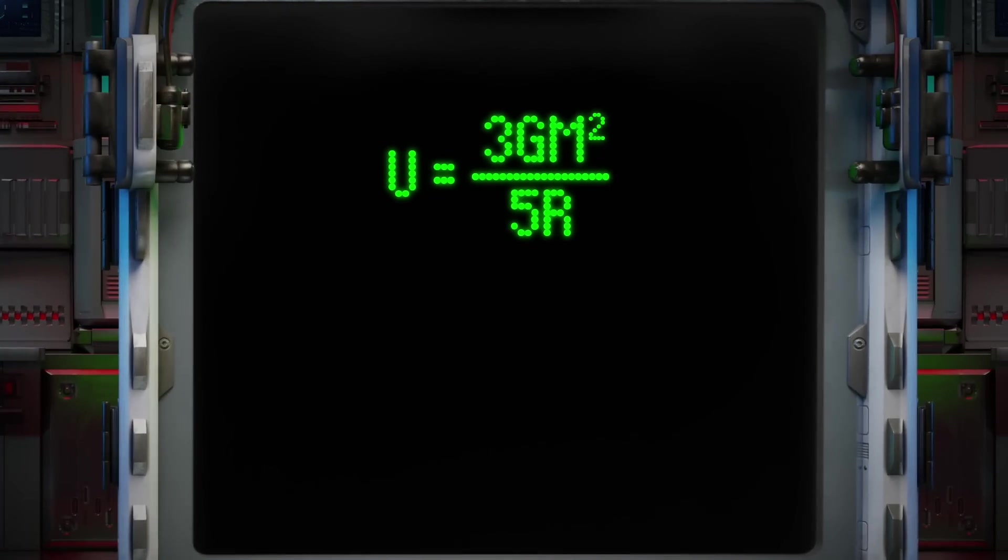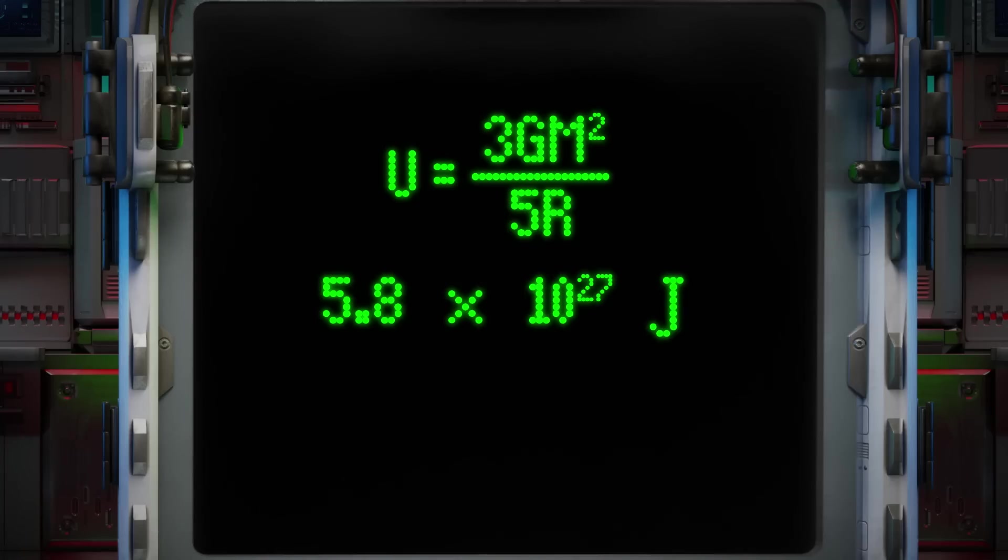The gravitational binding energy of a perfect sphere floating in space is equal to three times Newton's gravitational constant times the mass of the sphere squared, all of that by five times the body's radius. Plug in the numbers for Pluto and we get 5,800 septillion joules. Hey, that's my line, yeah, but you do.